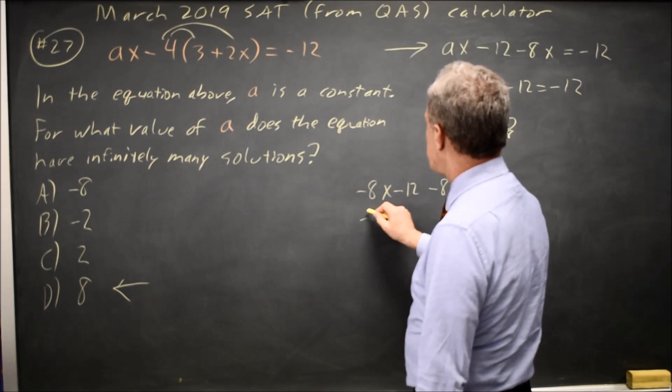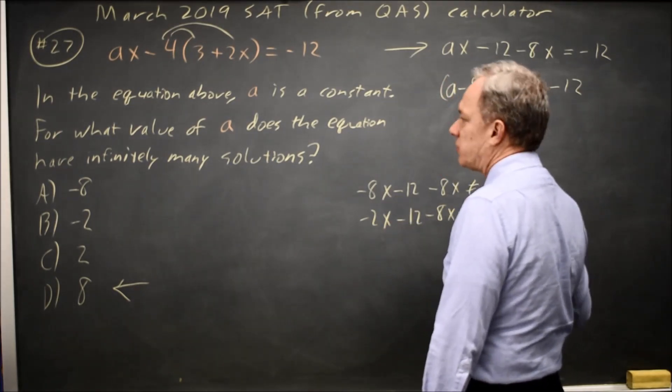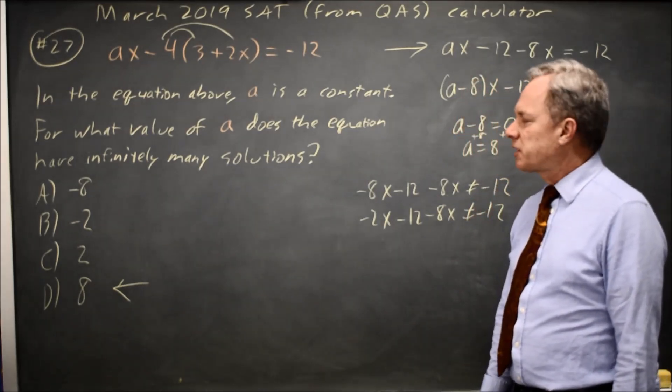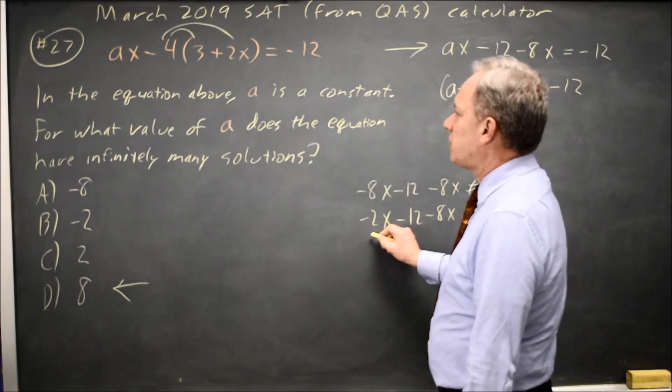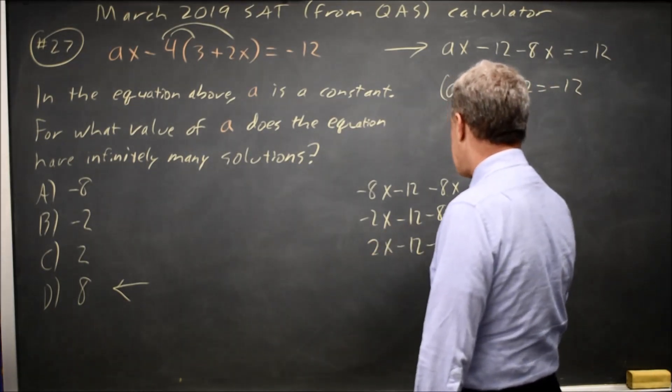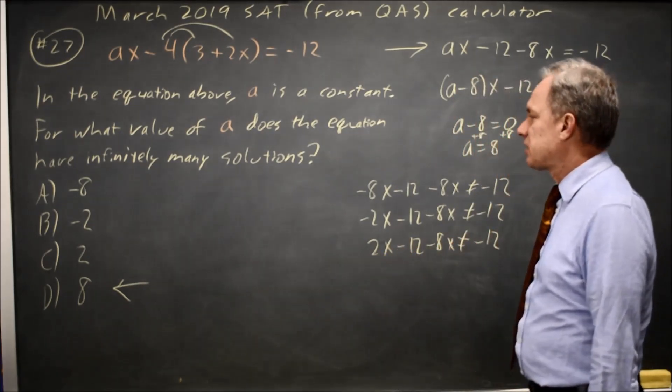If I try negative 2, negative 2X minus 12 minus 8X is still not negative 12. And while it may seem silly, there's not a lot of thinking going on and it's not a lot of time either. How about positive 2? Choice C, 2X minus 12 minus 8X is still not negative 12, because that's negative 12 minus 6X.